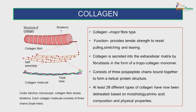Collagen is the major fiber type. Its function is to provide tensile strength to resist pulling, stretching and tearing. Collagen is secreted into the extracellular matrix by fibroblasts in the form of a tropocollagen monomer. It consists of three polypeptide chains bound together to form a helical protein structure. At least 28 different types of collagen have now been delineated based on morphology, amino acid composition and physical properties. We can see the three polypeptide chains of the collagen molecule forming a triple helix — this is the structure of collagen.